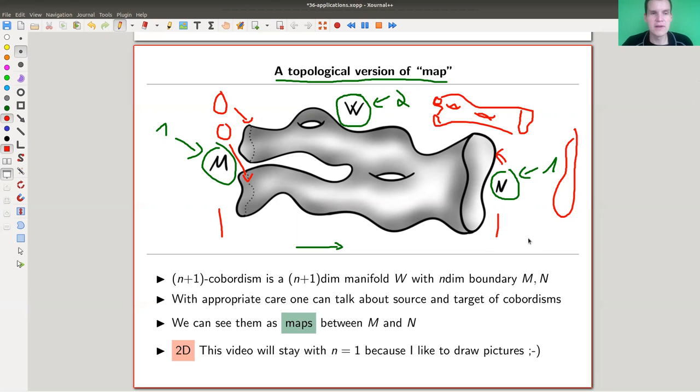Okay, so that's a cobordism, it's a higher dimensional version of a map if you want, and it goes from one boundary to the other in the appropriate sense. And I'm going to stick in this video with the two dimensional version. Why? Because I like to draw pictures, but actually nothing would stop me from making higher dimensional claims. As I said, I like to draw pictures, and I just can't draw a picture of a 512-manifold. That's a little bit sad, my apologies. But let's just stay with 2D. Anyway, it's already pretty exciting.